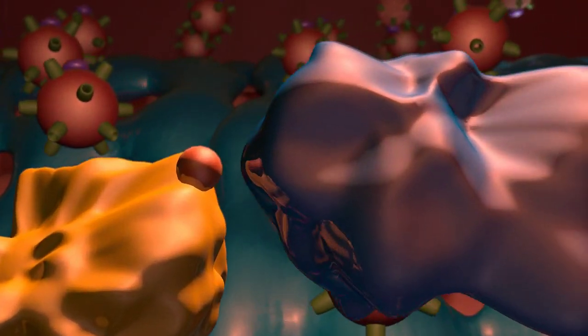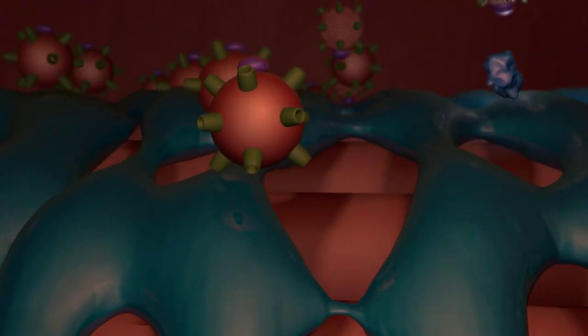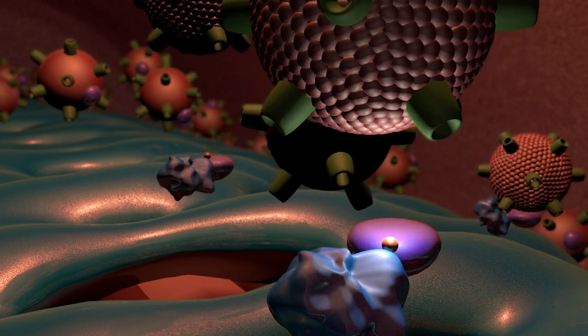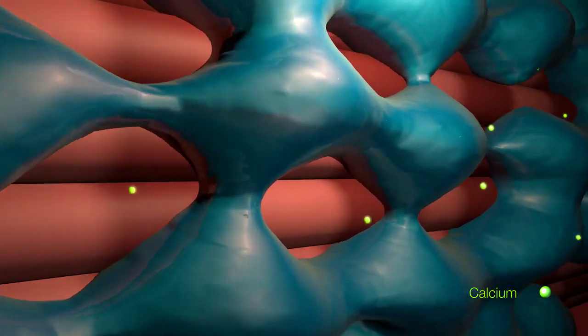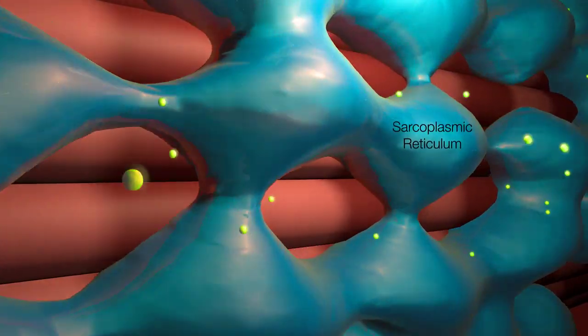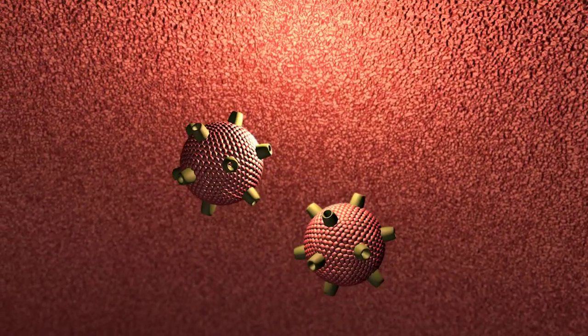AMPK plays a similar role to protein kinase B in recruiting TBC1D1, the protein that releases GLUT4 vesicles to the cell surface. Calcium released from the sarcoplasmic reticulum during contraction may also promote GLUT4 vesicle translocation through this pathway.